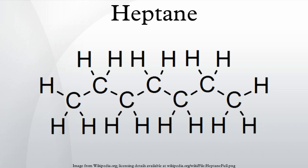N-heptane is the zero point of the octane rating scale. It is undesirable in petrol because it burns explosively, causing engine knocking, as opposed to branched-chain octane isomers which burn more slowly and give better performance. It was chosen as the zero point of the scale because of the availability of very high purity n-heptane, unmixed with other isomers of heptane or other alkanes, distilled from the resin of Jeffrey Pine and from the fruit of Pitosporum resiniferum.